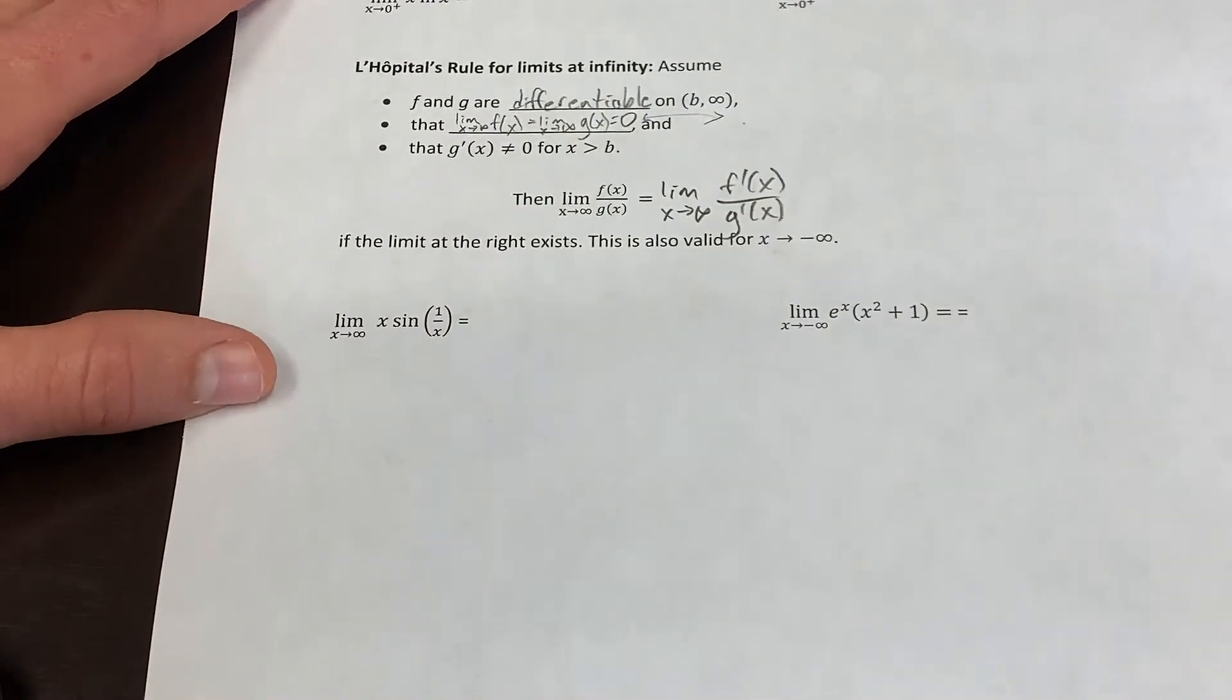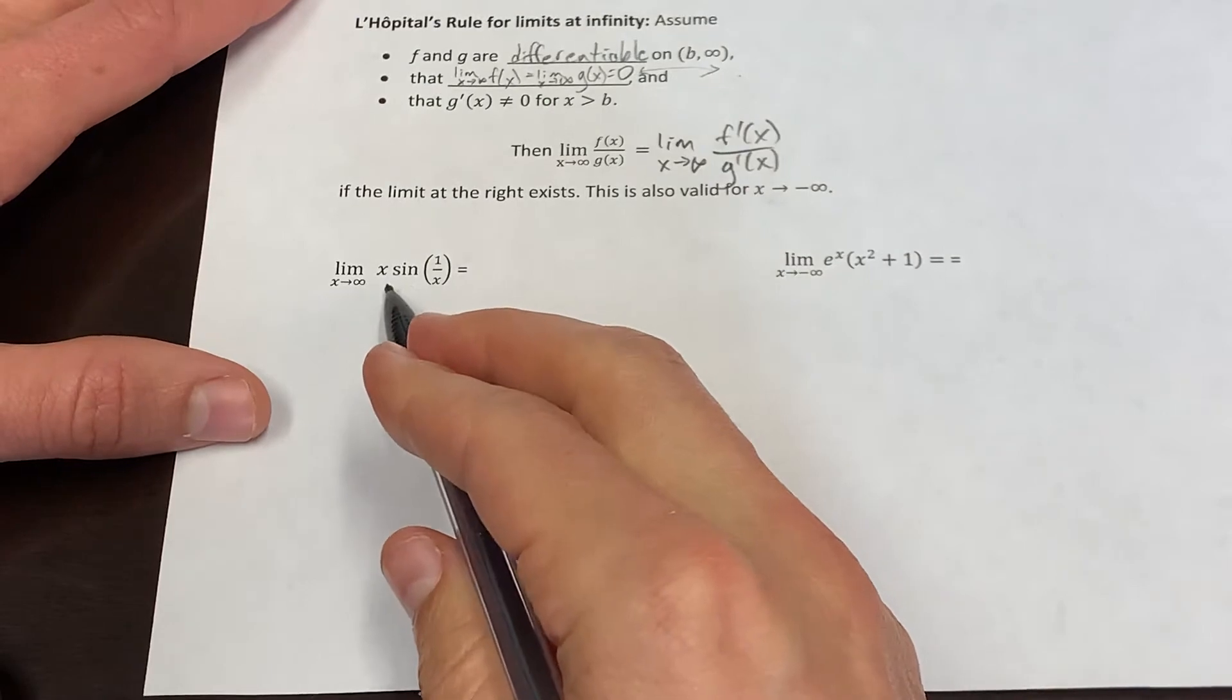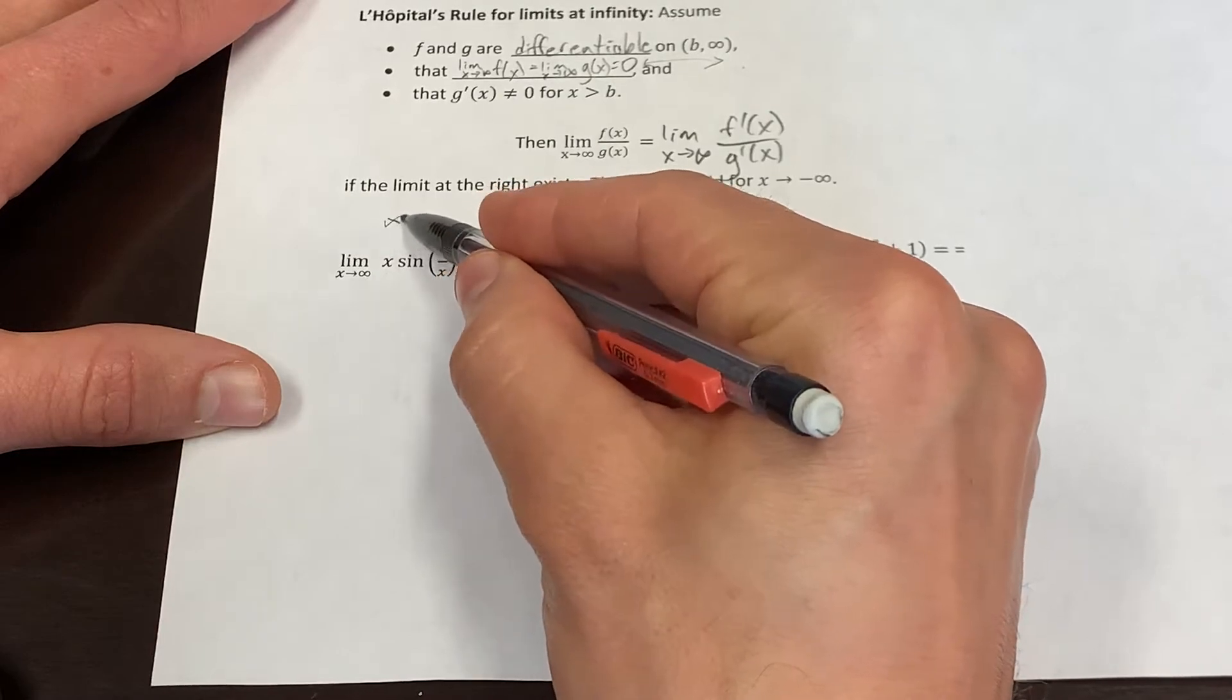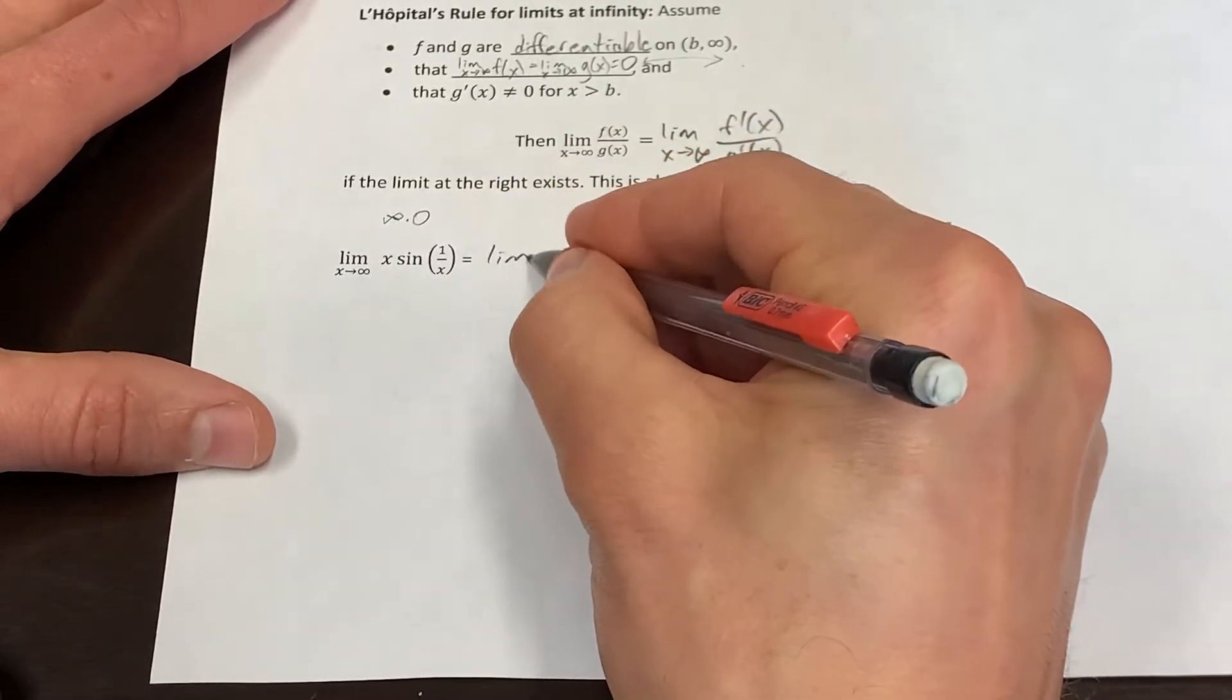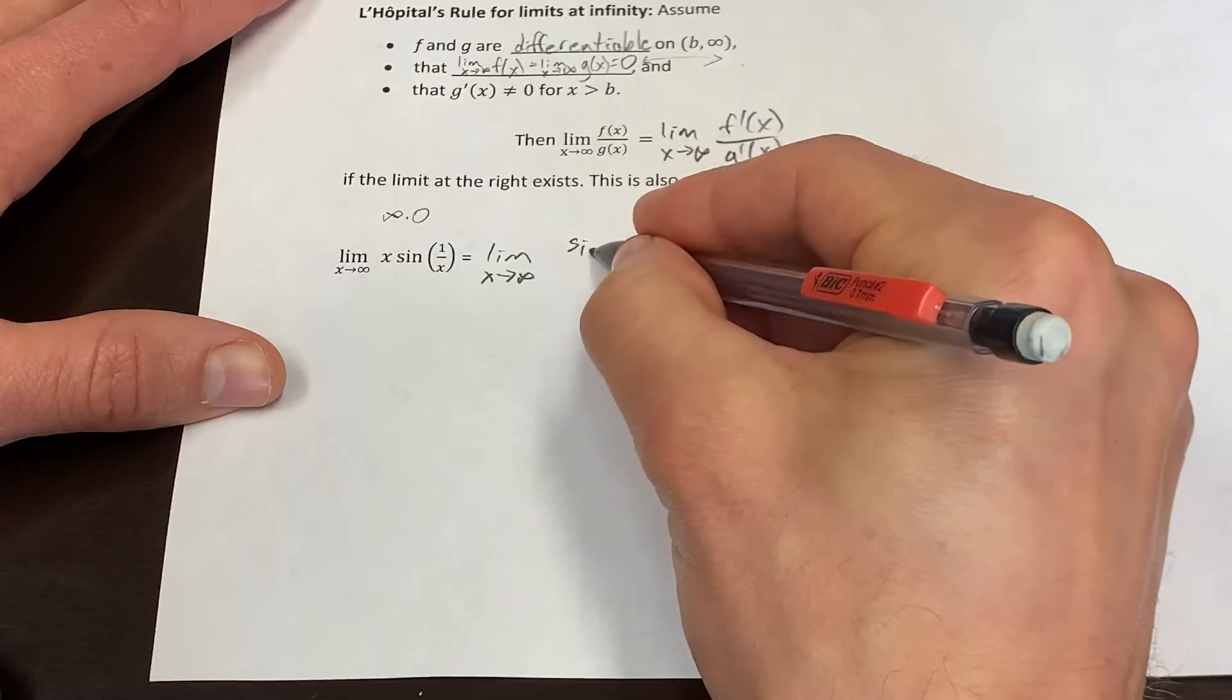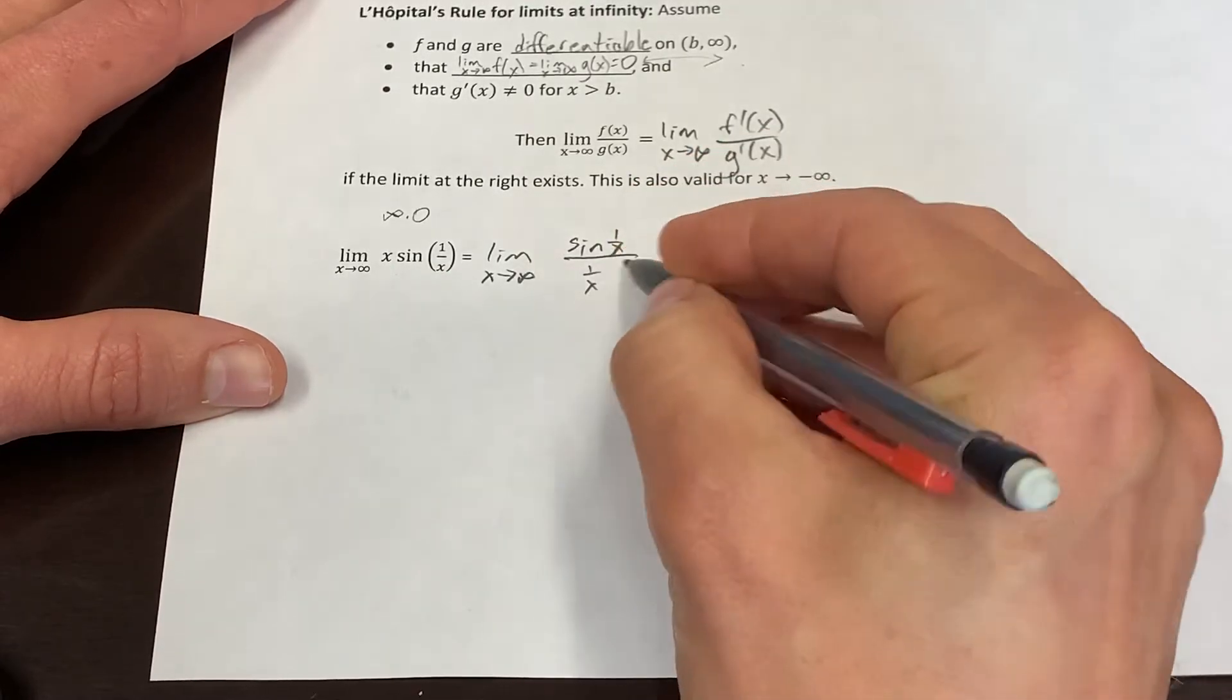So let's just have a look at two problems that look like that. What about this? Well, you might say, this is an infinity times zero indeterminate form. Well, if we just work up a little magic here, we can write this as sine of one over x over one over x. Now there's a nice fraction.